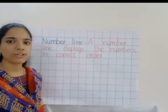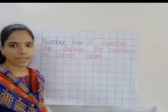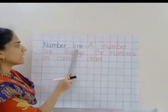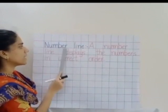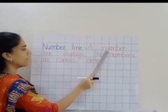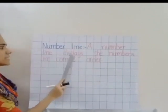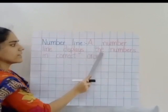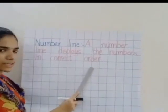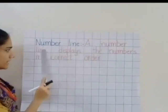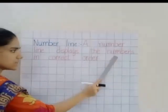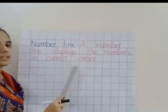Okay children. First let us know what is a number line. N-U-M-B-E-R number. L-I-N-E line. A number line displays the numbers in correct order. Yes children.